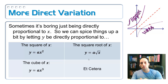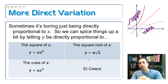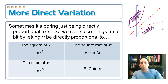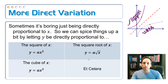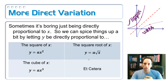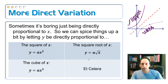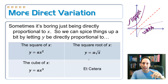This wraps up the direct variation review. You can see each of these equations varies to the square of x, the square root of x, the cube of x, or whatever power — that's why it says 'etc.' When we come back, we're going to take a look at inverse and joint variation.